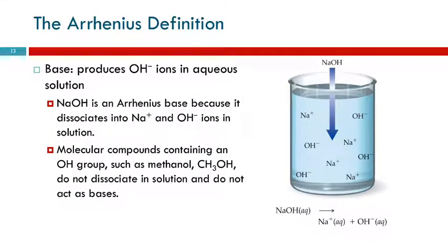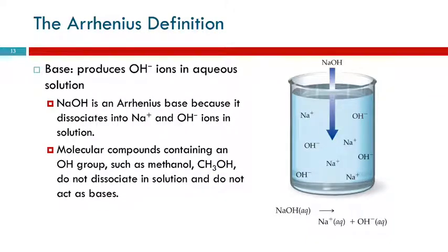The Arrhenius definition of a base is something that produces hydroxide ions in aqueous solution. Sodium hydroxide is an Arrhenius base — it's an ionic compound that's soluble; put it in water and it separates into sodium ions and hydroxide ions. There are compounds that have OH in their formula, like methanol, but methanol is a molecular compound that does not ionize in water and is not a base. The distinction: bases with hydroxide are ionic compounds with a metal and a hydroxide ion. If there's no metal, like CH₃OH, it's not a base.